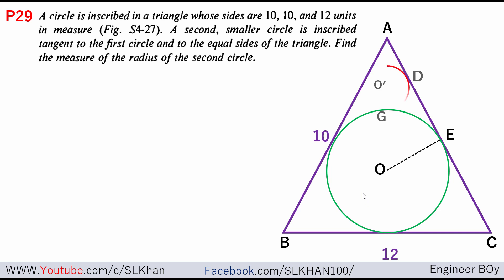A second smaller circle is inscribed tangent to the first circle and to the equal sides of the triangle. Now we are asked to determine the radius of the smaller circle, that's the red one.